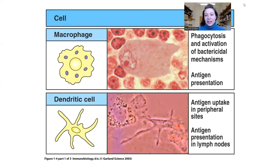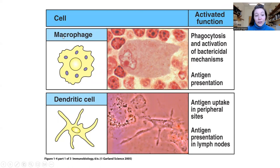Let's take a look at each of the main players in the innate immune lecture. There is the macrophage — this is one of the most well-known innate immune cells. They primarily kill through eating, so phagocytosis. They have other bactericidal mechanisms; bactericidal means bacteria-killing.